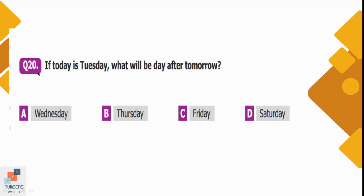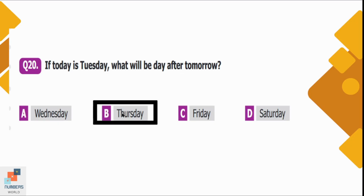Question number 20: If today is Tuesday, what will be the day after tomorrow? If today is Tuesday, tomorrow will be Wednesday and the day after tomorrow is Thursday. Option B is the correct option.